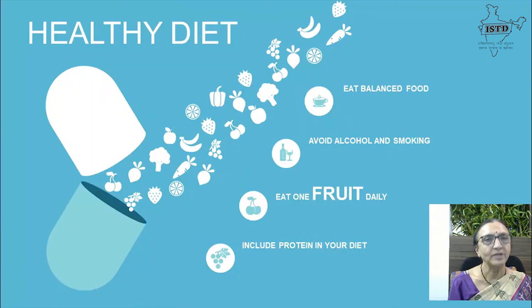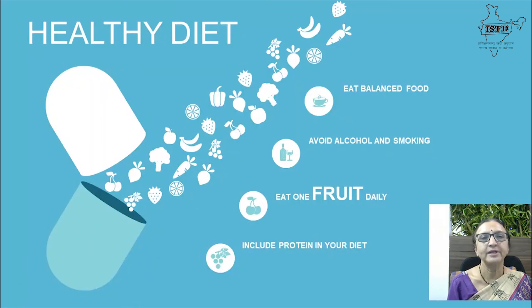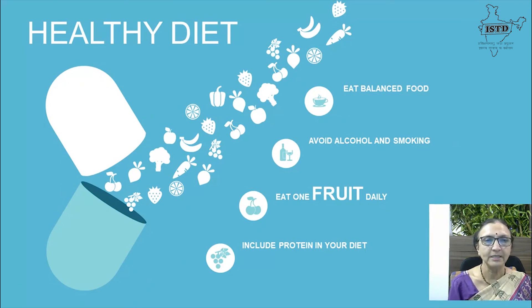About healthy diet: eat balanced food, avoid alcohol and smoking, eat one fruit daily, and include protein in your diet.